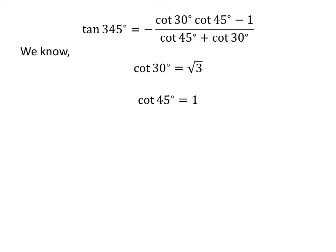As we know, cotangent of 30 degrees is equal to square root of 3, and cotangent of 45 degrees is equal to 1. So we plug in these values in the above expression. We get tangent of 345 degrees is equal to minus square root of 3 times 1 minus 1, upon 1 plus square root of 3.